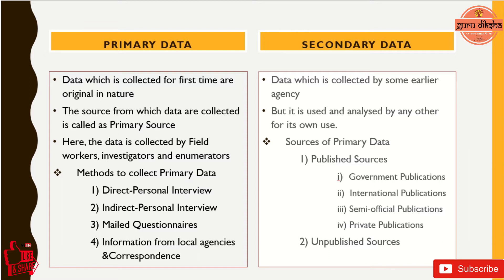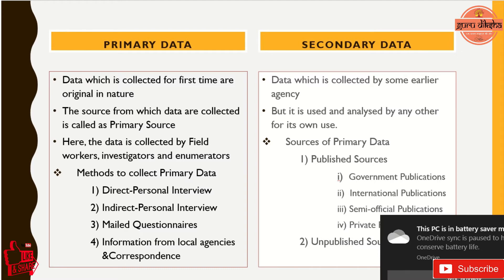The questionnaire includes age, gender, occupation and income. Later they go to the family details like mother, children, and what they are doing — what they are studying, whatever may be — and ask locality number, locality location, door number, and collect their mobile numbers or email IDs. Based on the questionnaire they have prepared, the source from which data are collected is called a primary source. Those data are collected by field workers, investigators and enumerators.